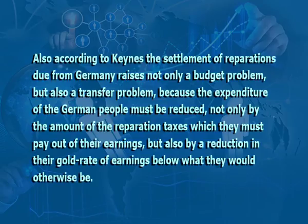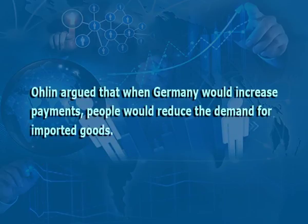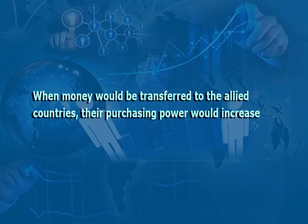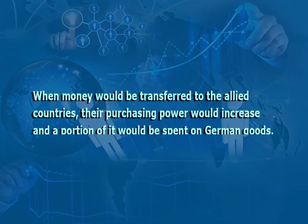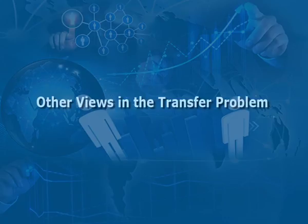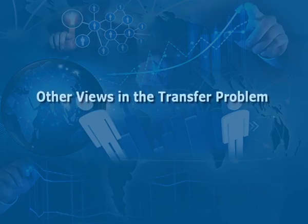According to Keynes, the settlement of reparation due from Germany raises not only a budget problem but also a transfer problem, because the expenditure of the German people must be reduced not only by the amount of the reparation taxes but also by a reduction in their real rate of earnings. On the other hand, Ohlin argued that when Germany made payments, people would reduce their demand for imported goods, and when money was transferred to the allied countries their purchasing power would increase, and a portion of it would be spent on German goods — thus there would be a reduction in imports and increase in exports of Germany without worsening its terms of trade.